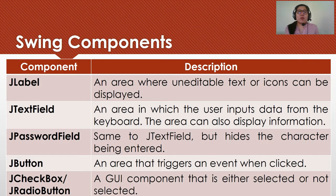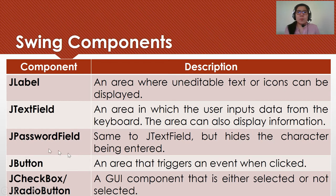We have here the commonly used SWING components with their description. For J-Label, it is an area where uneditable text or icons can be displayed. For J-Text Field, it is an area in which the user inputs data from the keyboard; the area can also display information. J-Password Field is the same as J-Text Field but hides the character being entered.